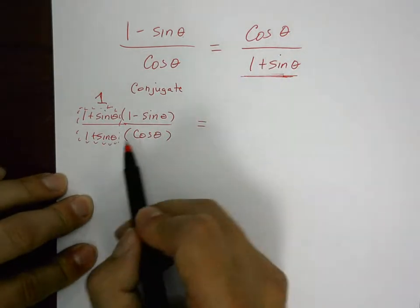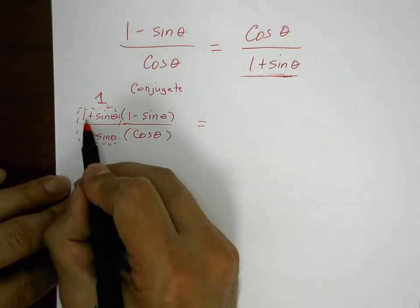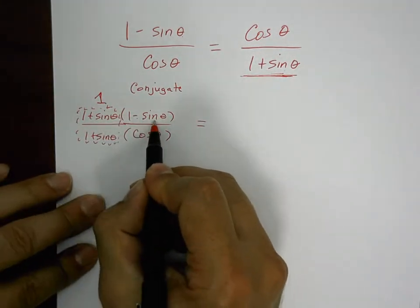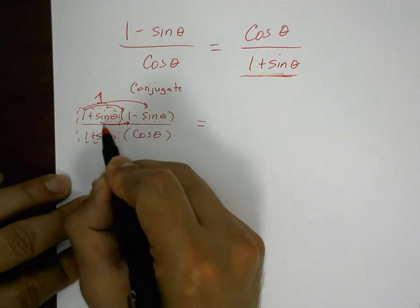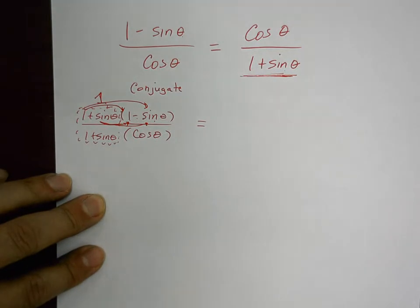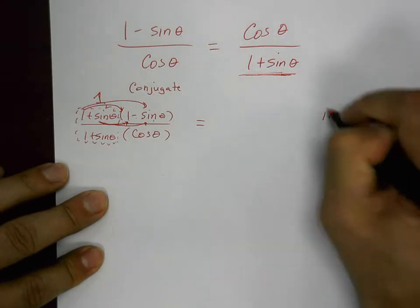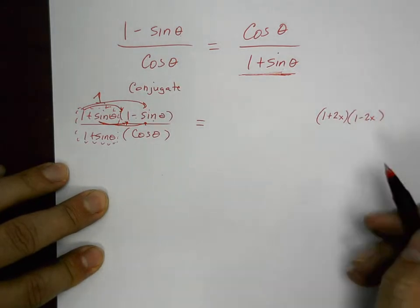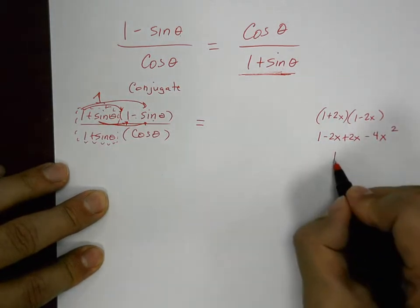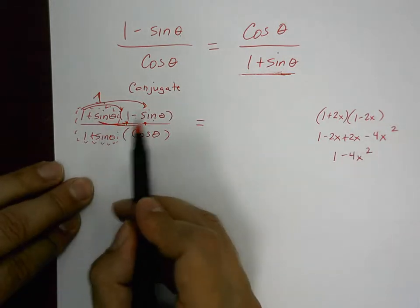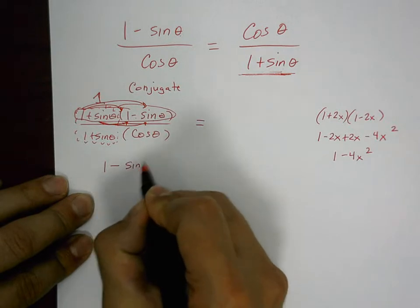It will get there. When you take one plus sine of theta times one minus sine of theta, and expand it: one times one, one times negative sine, positive sine times one, positive sine times negative sine — the middle terms cancel out. It's like one plus two x times one minus two x equals one minus four x squared. Similarly, one plus sine times one minus sine gives one minus sine squared theta.